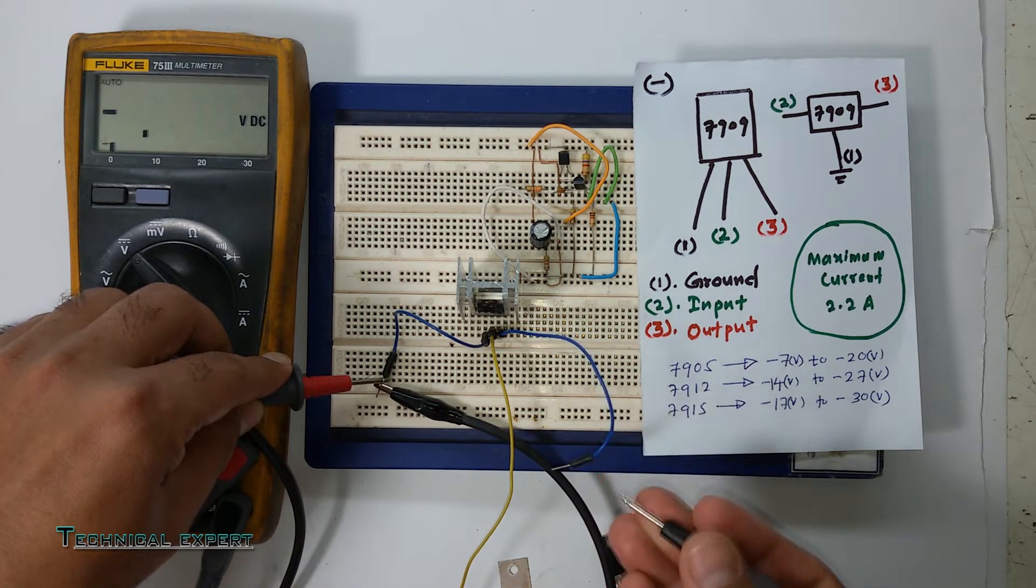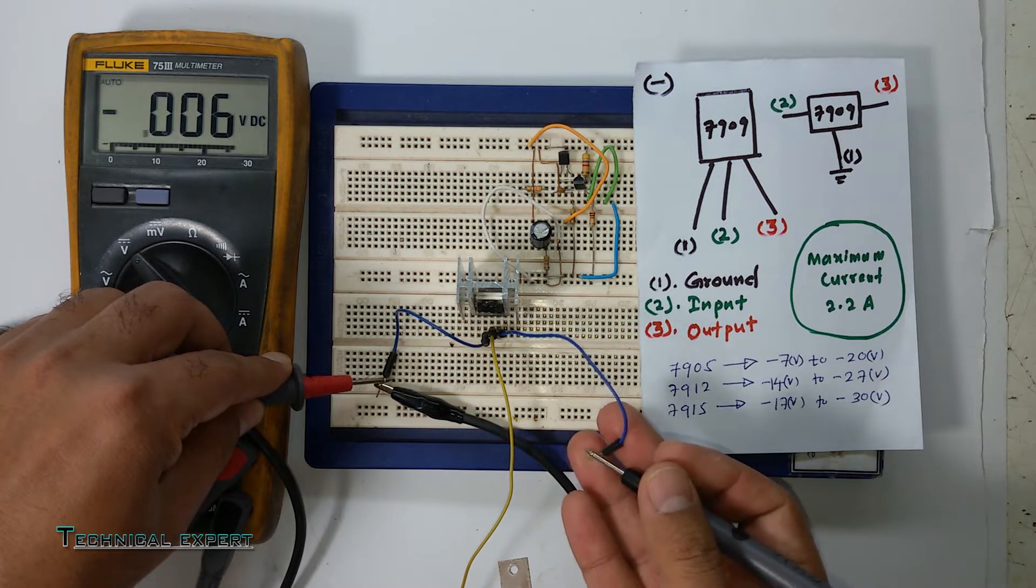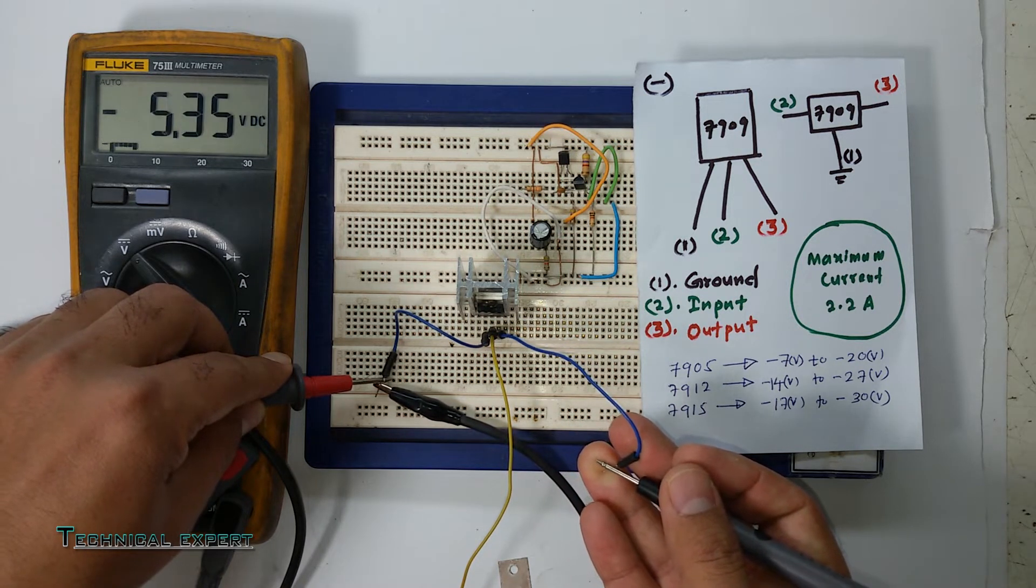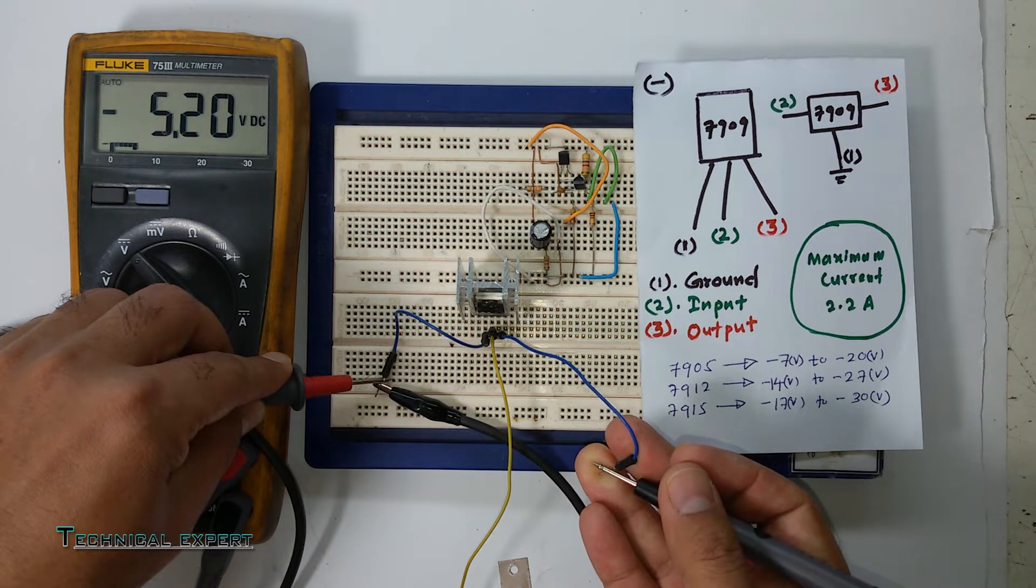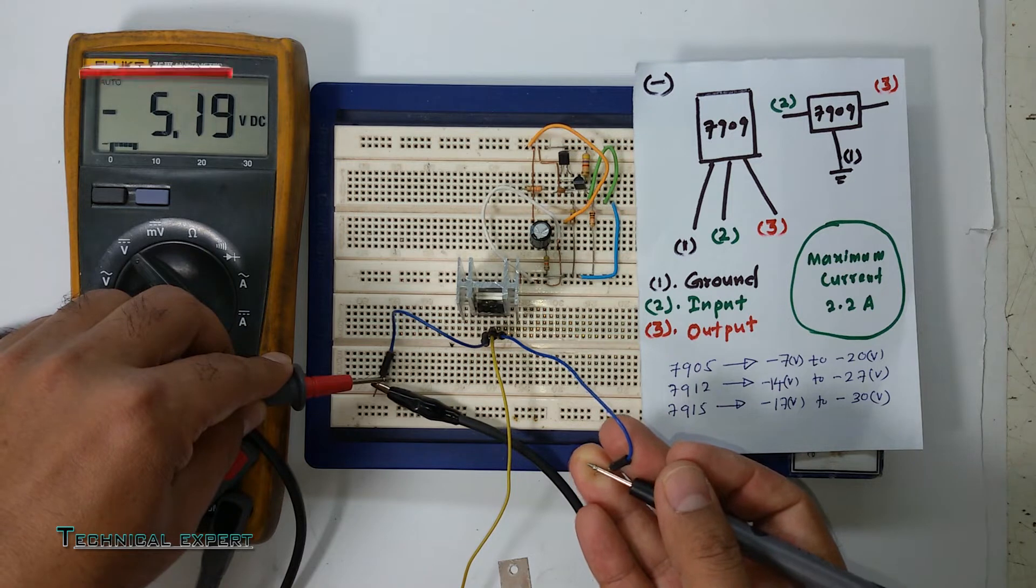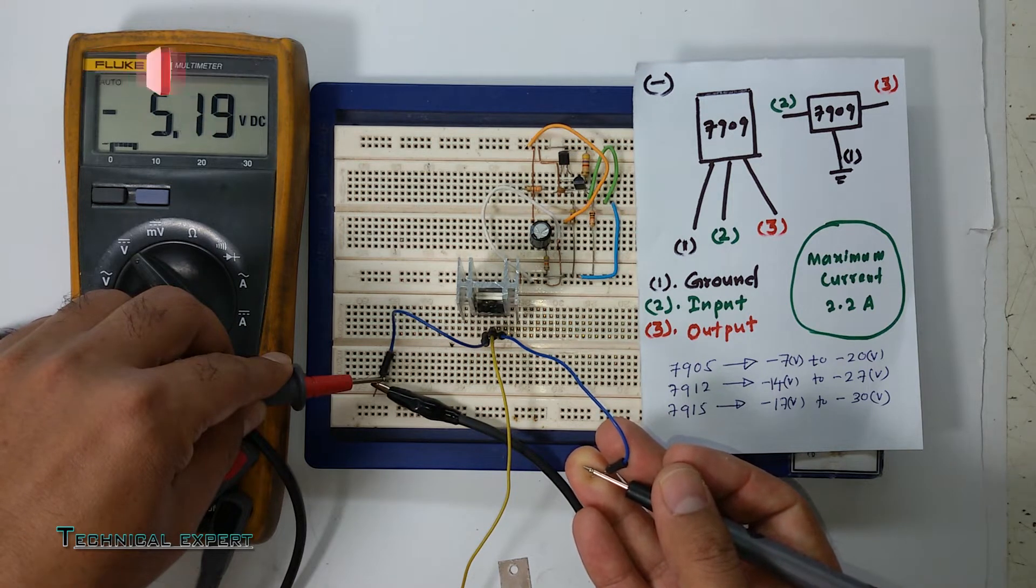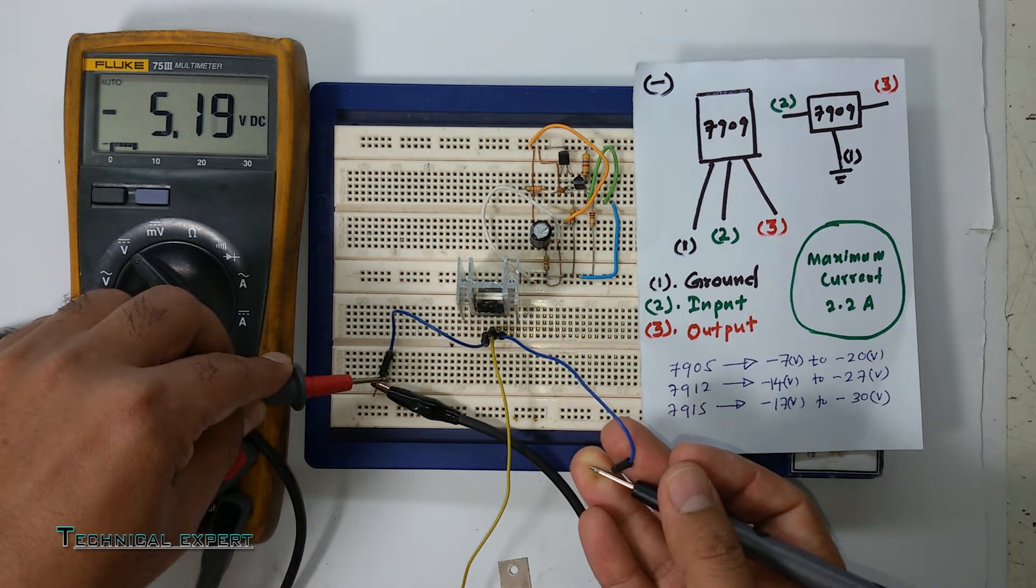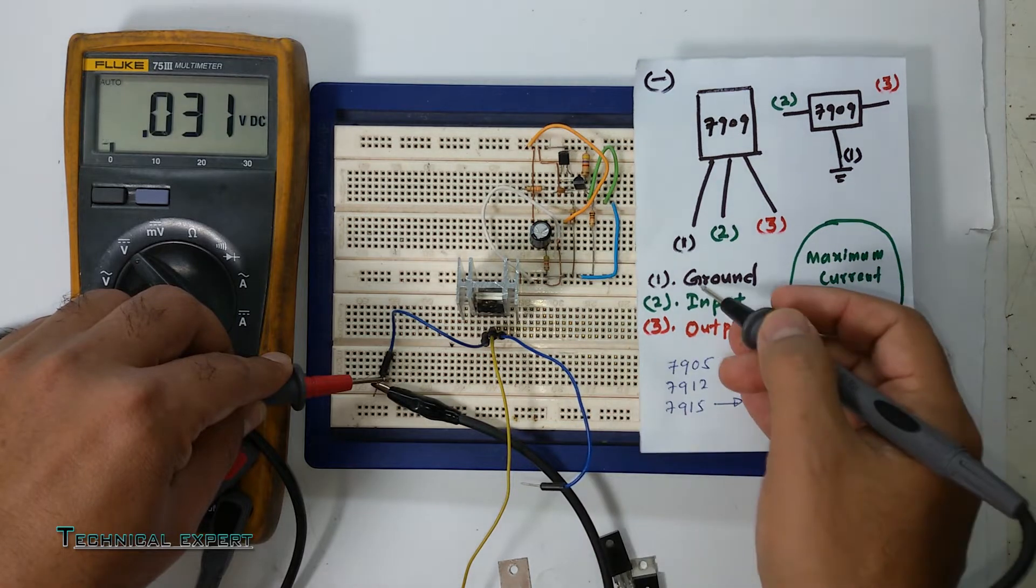As you can see, a minus five voltage is there. This is the purpose of the 7905 voltage regulator—to get a -5V output.